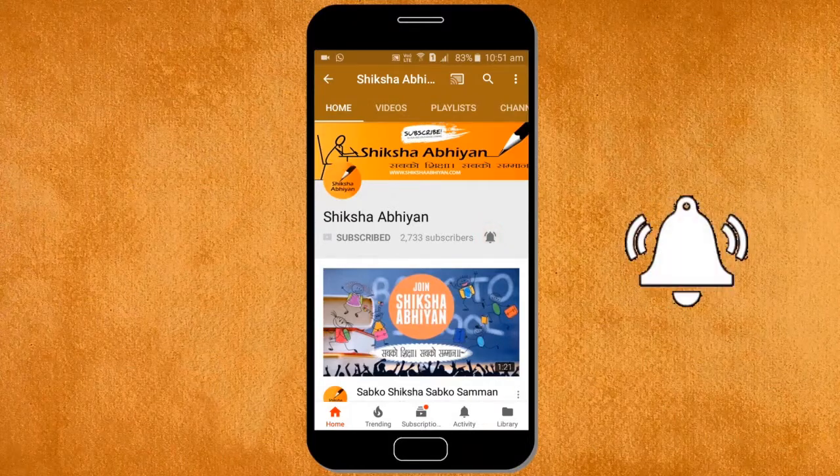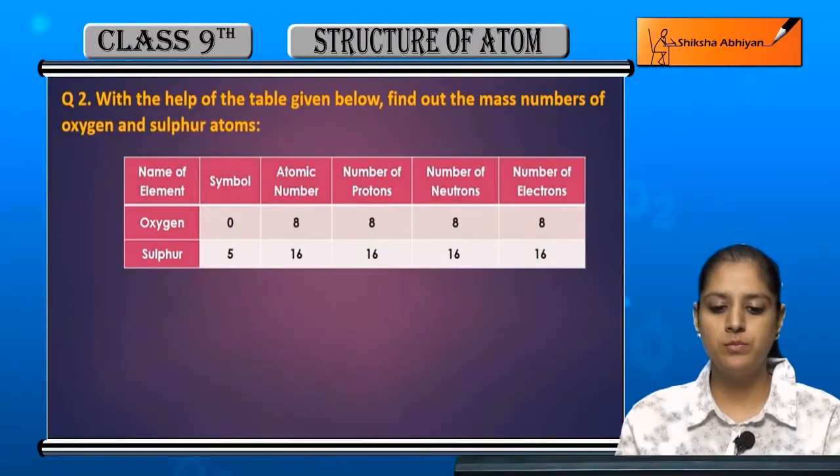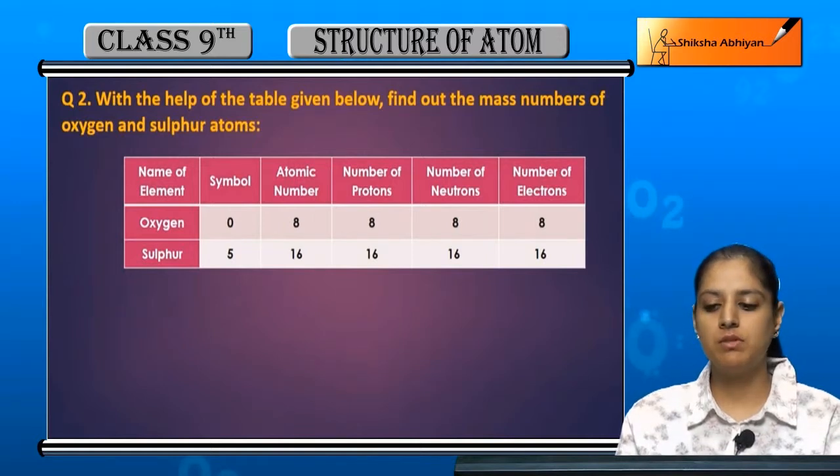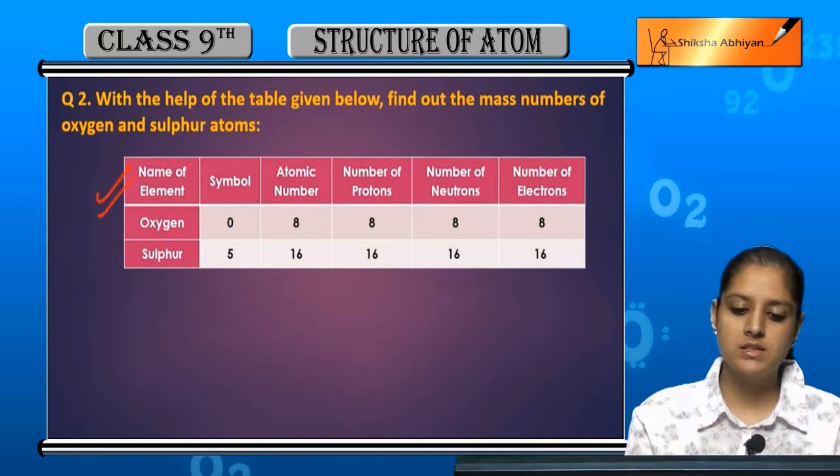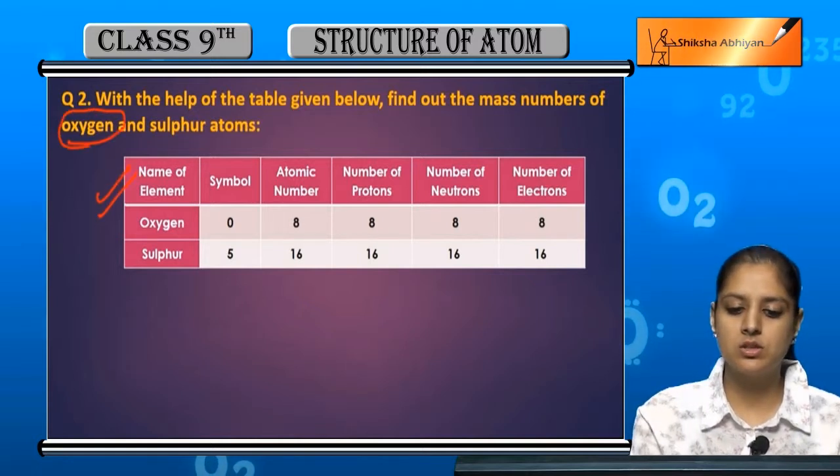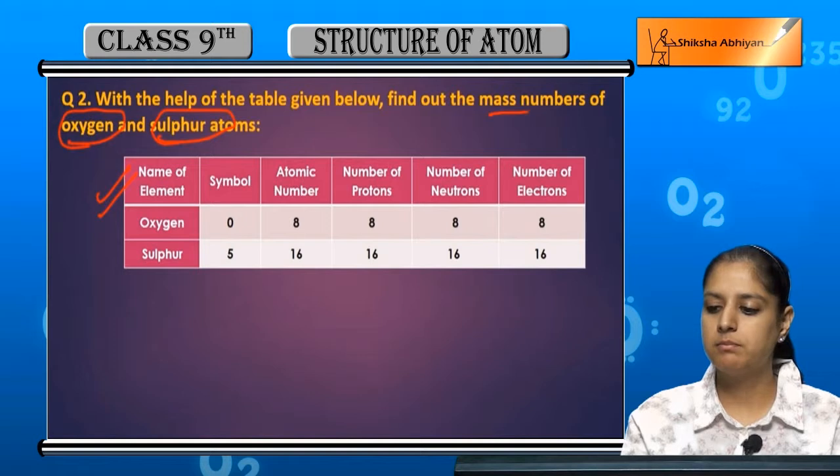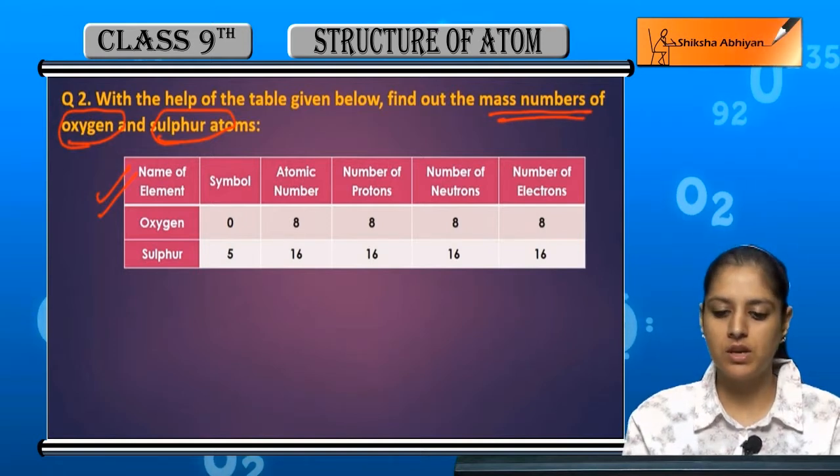Now question number two: with the help of the table given below, find out the mass numbers of oxygen and sulfur atoms. Table ko use karke hume oxygen aur sulfur atoms ka mass number find out karna hai.